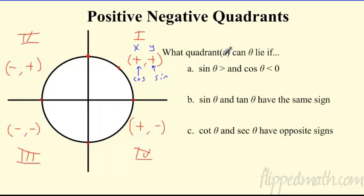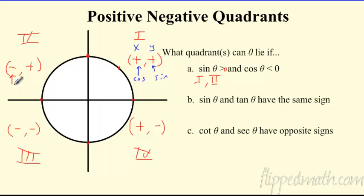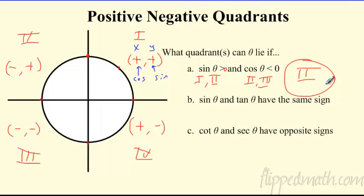What quadrant has sine positive? Sine is positive in quadrants one and two. What quadrant also has cosine negative? Cosine is negative in quadrants two and three. Where they overlap — that's quadrant two only. So if sine is positive and cosine is negative, theta must be in quadrant two.